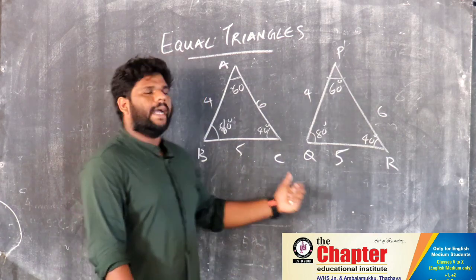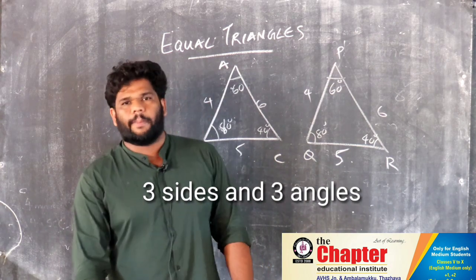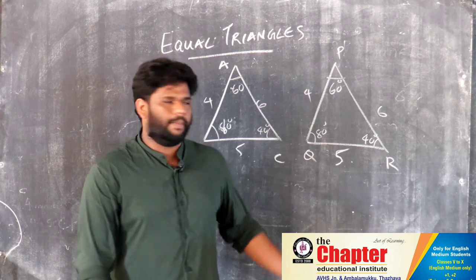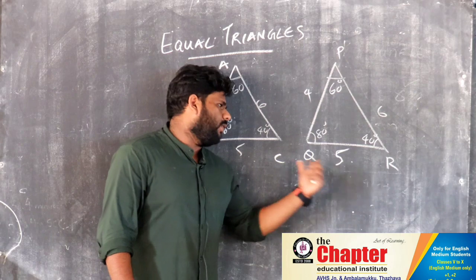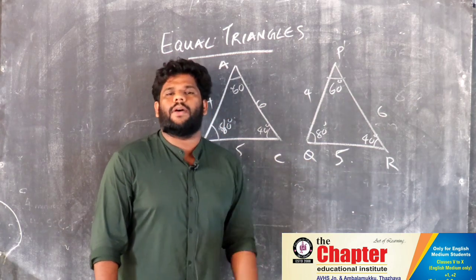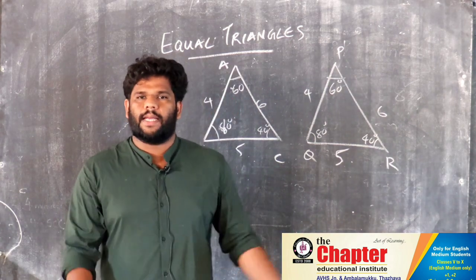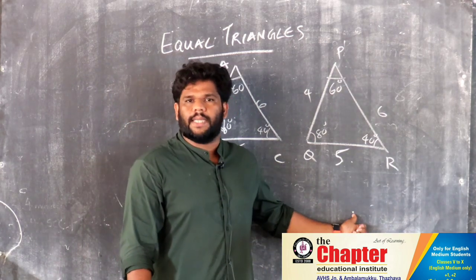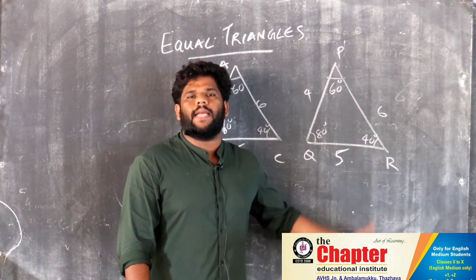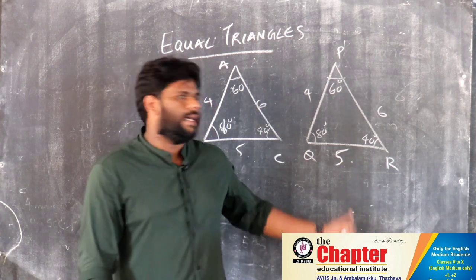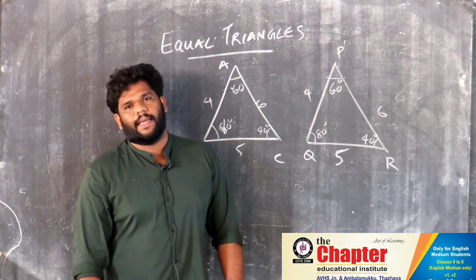Even if the triangle has equal three angles, if the names of two triangles are different, they will still be equal. Three angles of one triangle are equal to three angles of the other — that is, A, B, C equals P, Q, R — which means they are equal triangles. Triangles with the same sides and the same angles are called equal triangles.